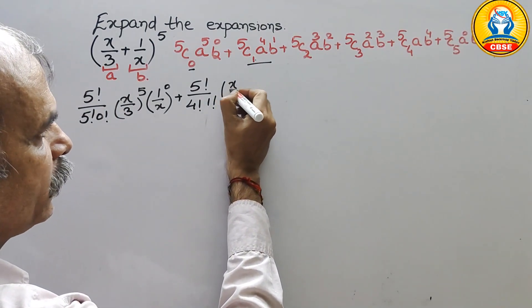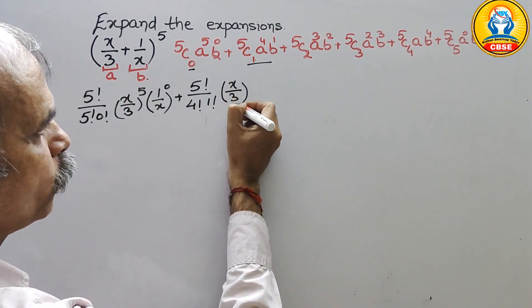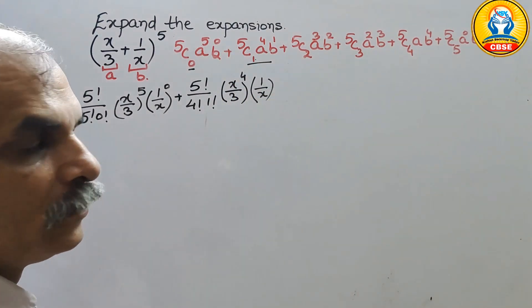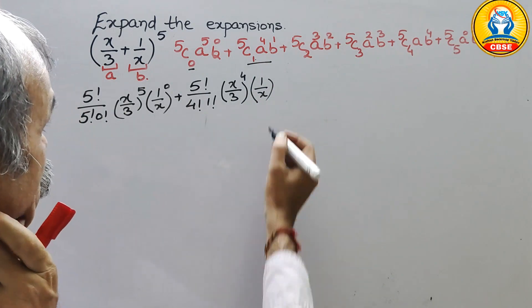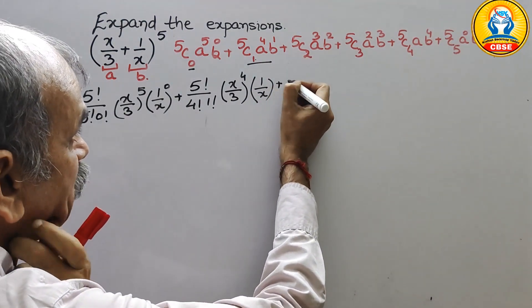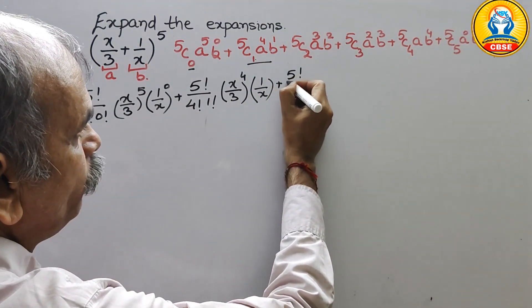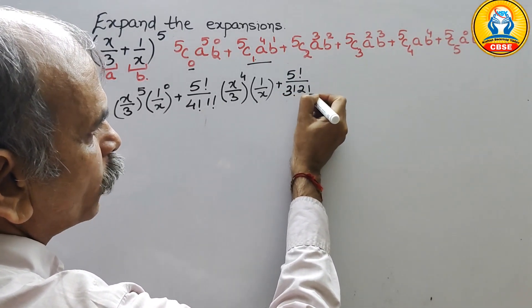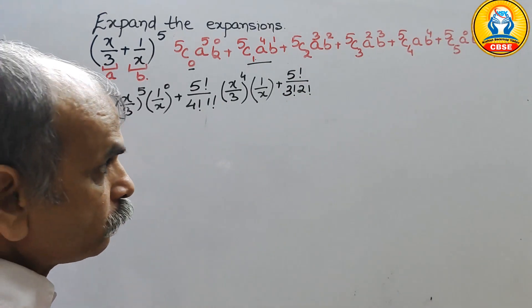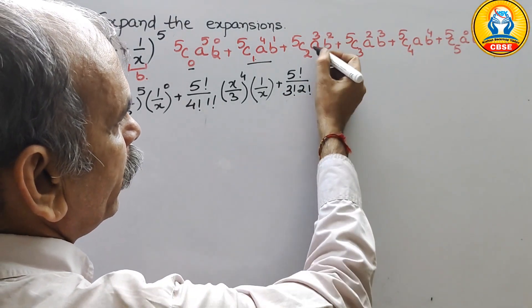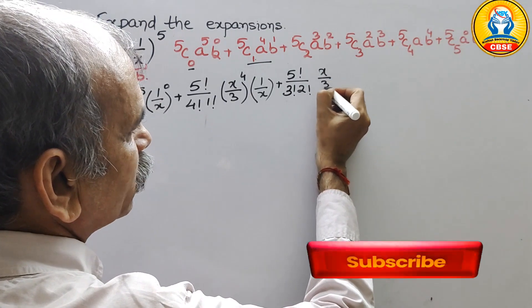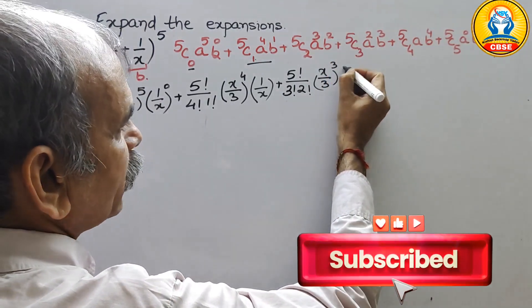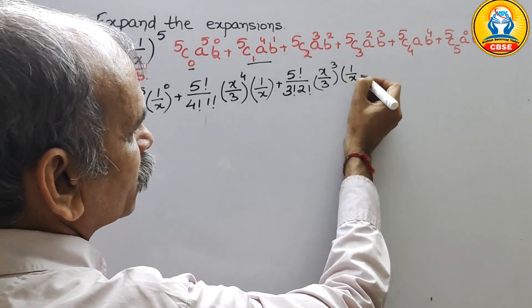Next comes a to the power of 4, that means (x/3) to the power of 4, and b is 1/x. Next is 5C2, which is 5 factorial divided by 3 factorial times 2 factorial. Then a cubed means (x/3) whole cube, and b squared is (1/x) squared.